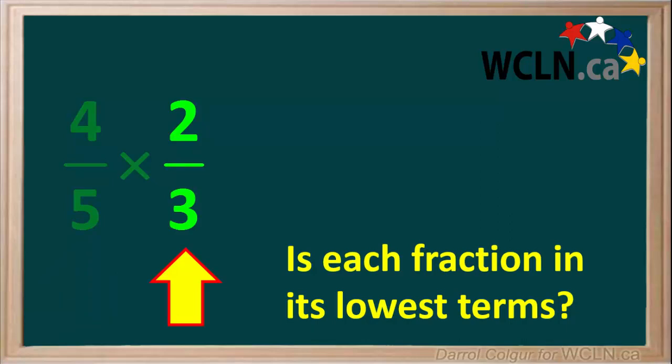If either one or both of the fractions was not in its lowest terms, it would be best to reduce it to its lowest terms before we carry out the multiplication.